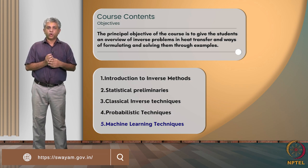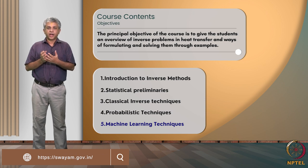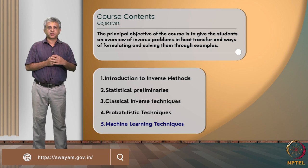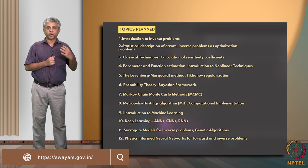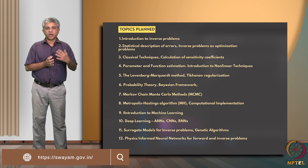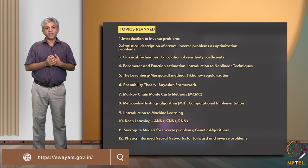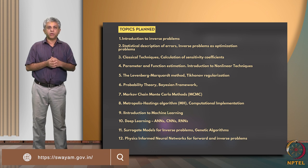The first is classical techniques, starting from linear regression, non-linear regression, and connected techniques. The second is probability-based techniques — Bayesian techniques, Monte Carlo, etc. The third and final set are newer techniques that are gaining in popularity: machine learning based techniques. Specifically, we will also be looking at physics-informed neural networks, a recent development within the last couple of years.